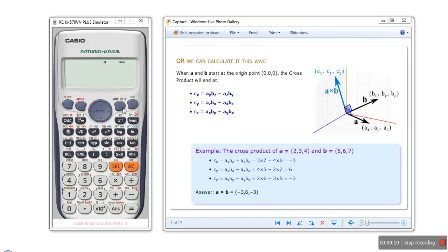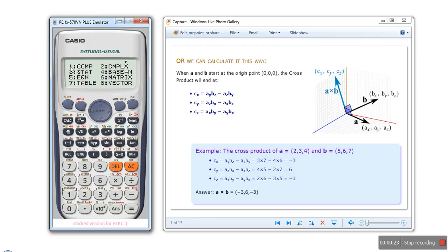In our calculator, first we need to set vector mode. Press the mode button and in this list select vector by pressing key 8. Now we need to enter our vectors, so first vector we will store in vector A.